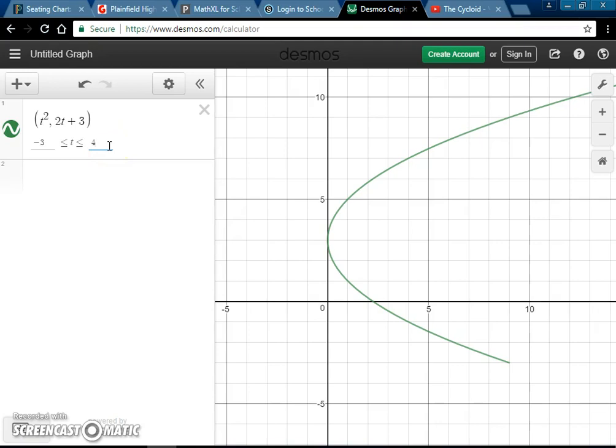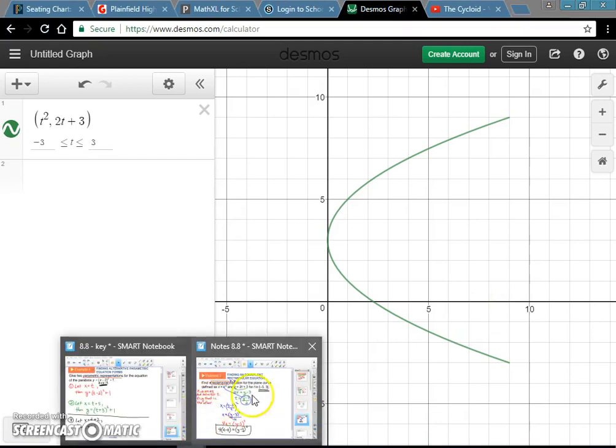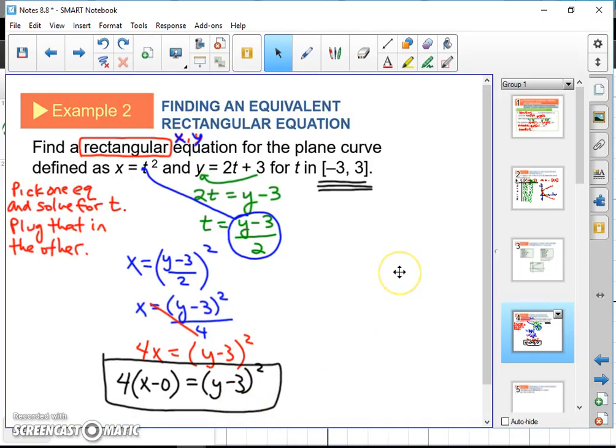It stops because of that interval. If that interval had extended, then the graph would have extended further. But it stops. And if you look at the X axis, it stops at 9. This graph goes from X equals 0 to X equals 9 and stops.